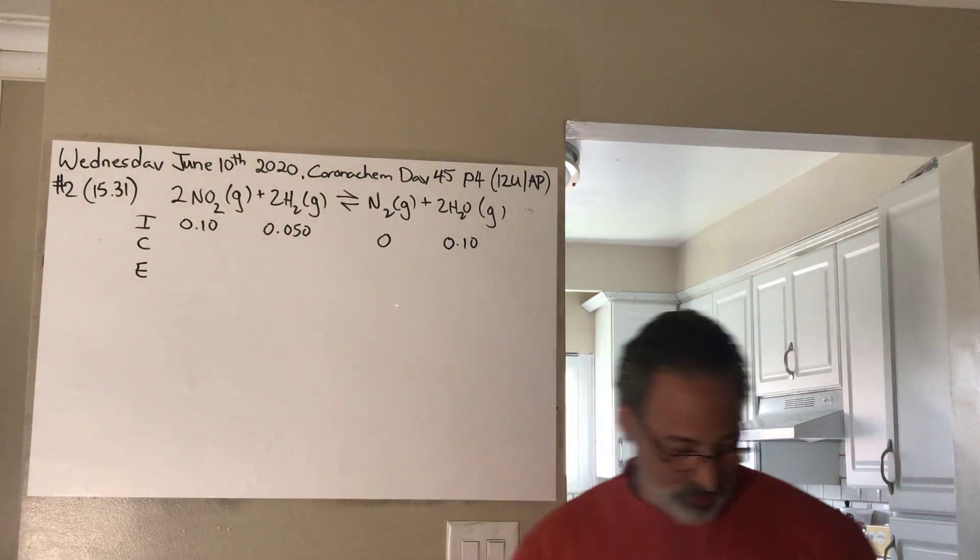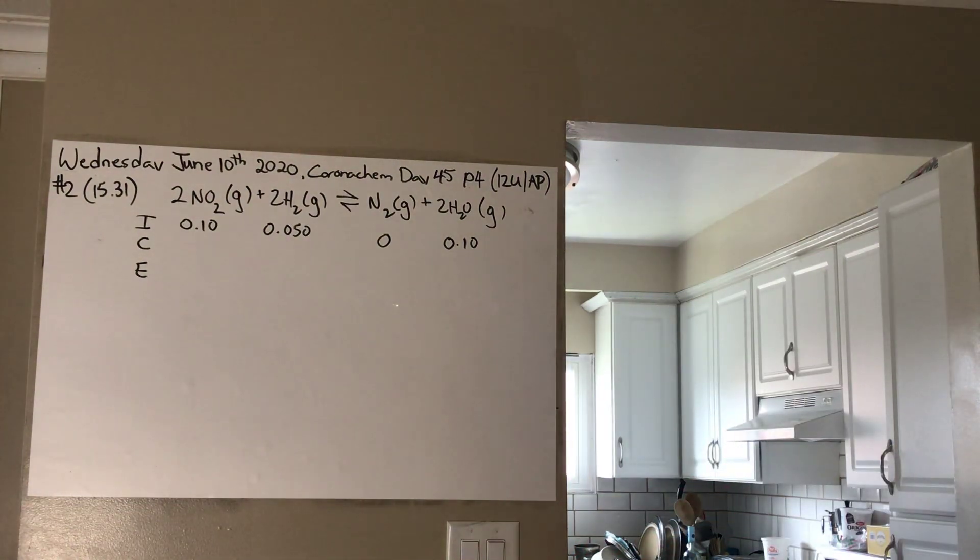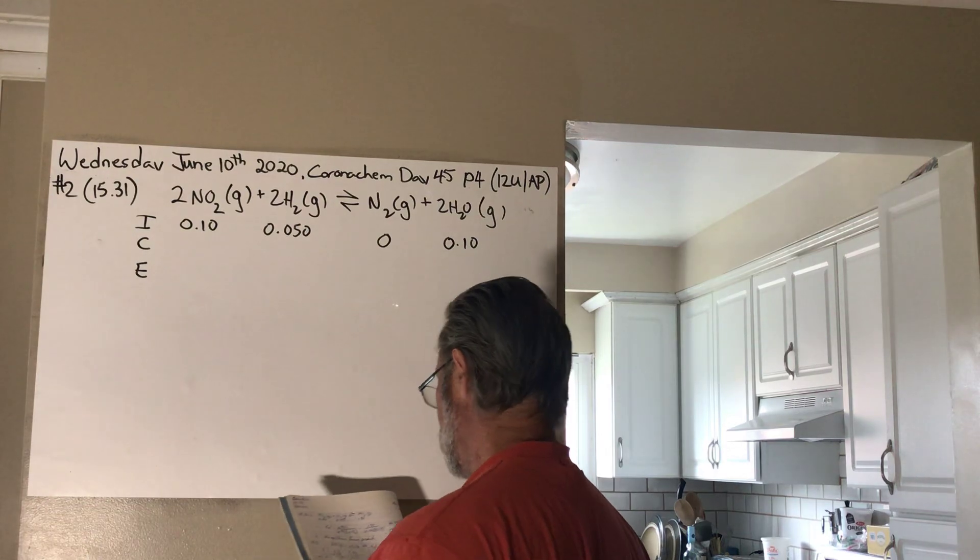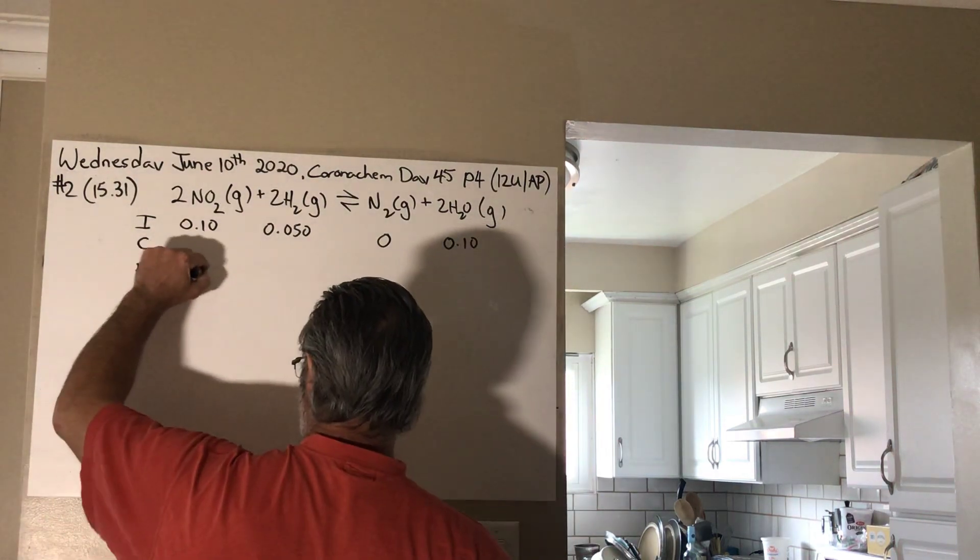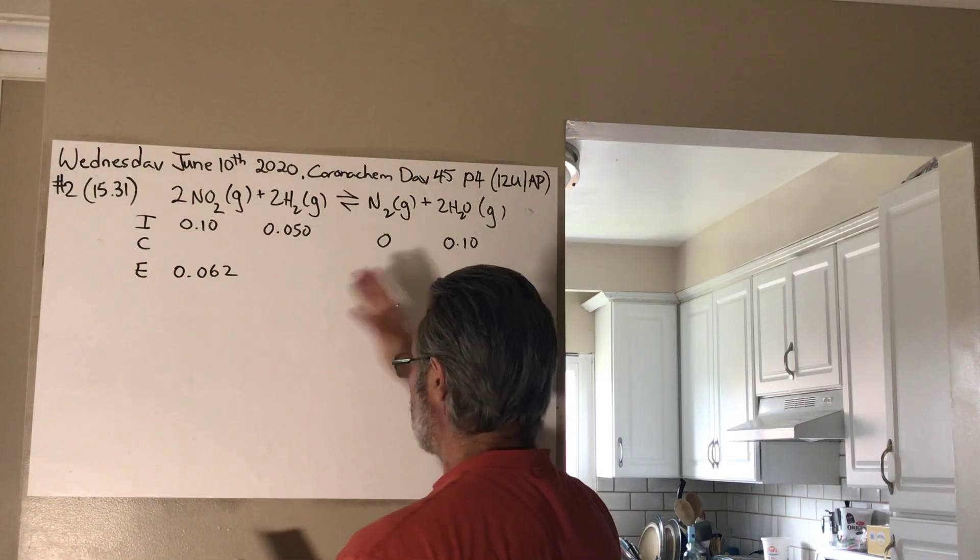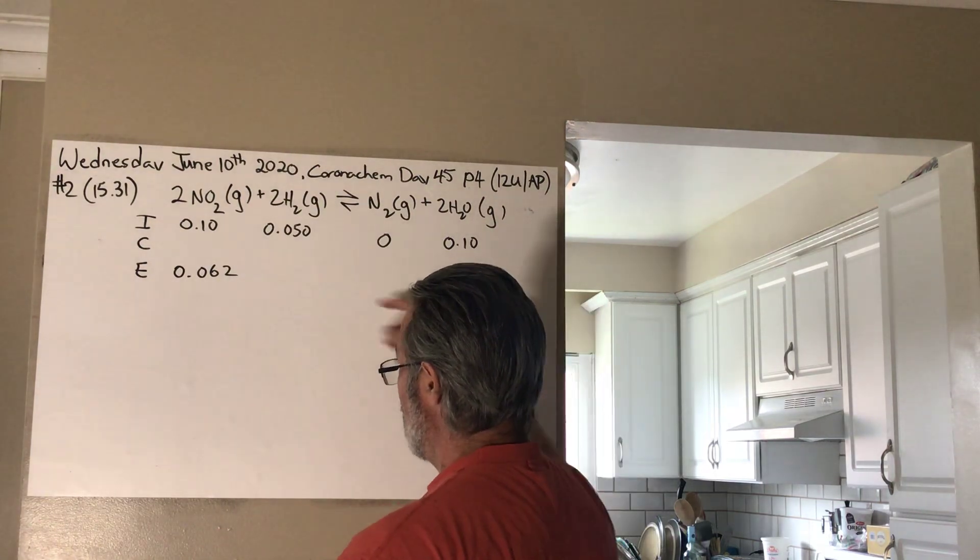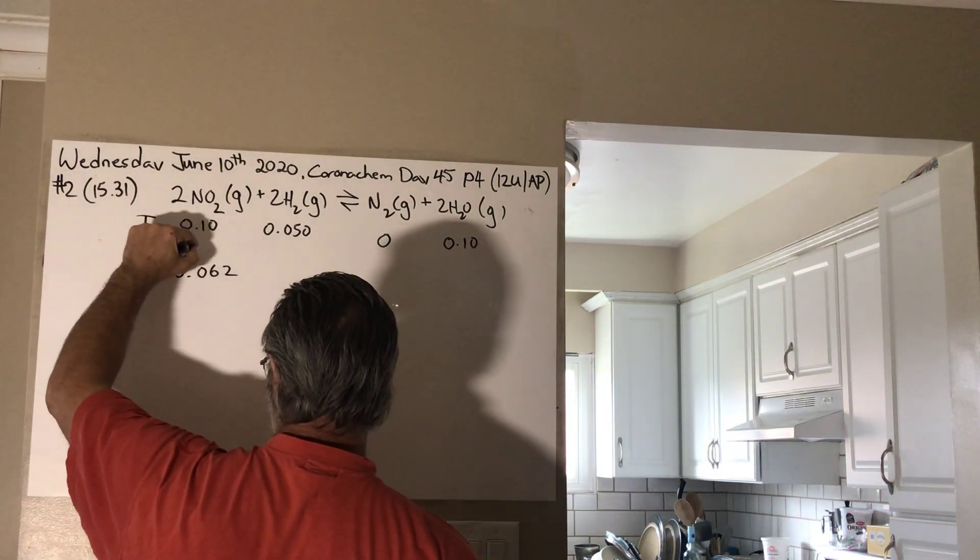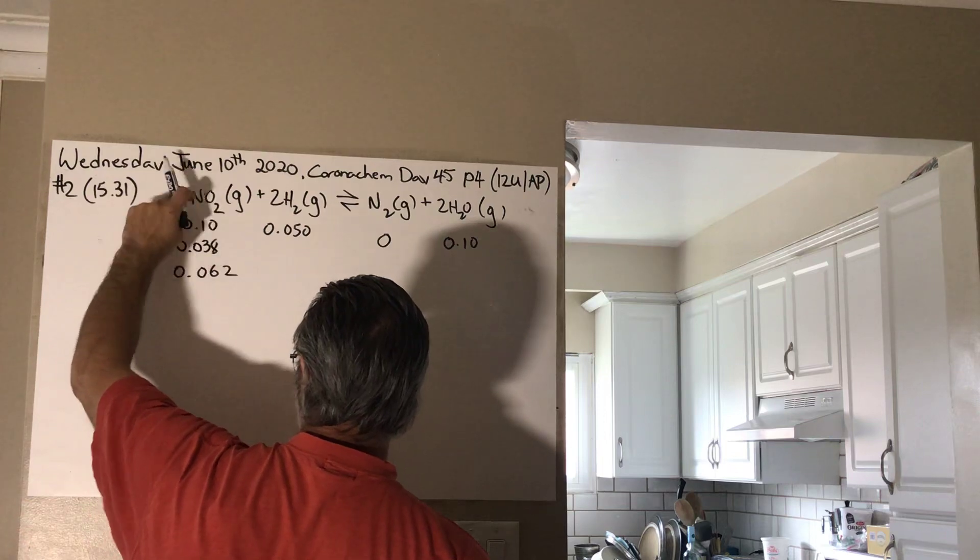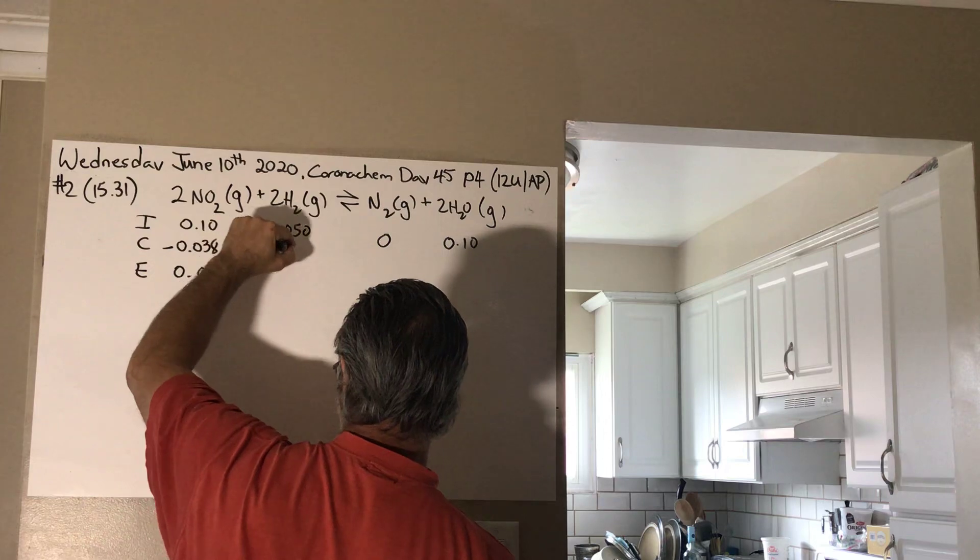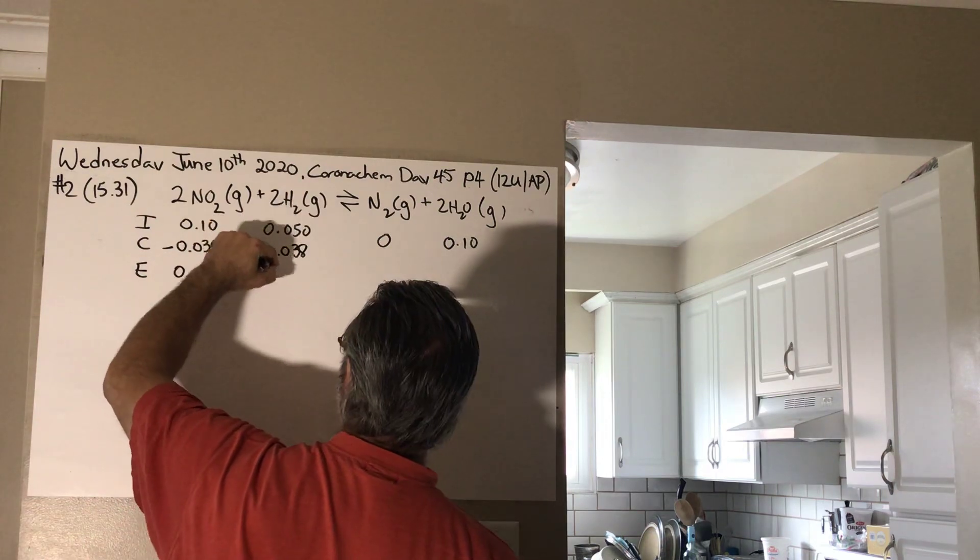So, what did we already know from this reaction, 1531? They told you all the initial conditions, and then they told you at equilibrium NO was 0.062. So, this is what I had as my given information. But from that, I can construct what happened everywhere else. How did I get from here to here? Well, I lost 0.038. So, if I lost 0.038 here, I lost it also over here, because it's a 2 to 2 stoichiometry. So, this is going to be 0.038, and it's going to end up with 0.012.